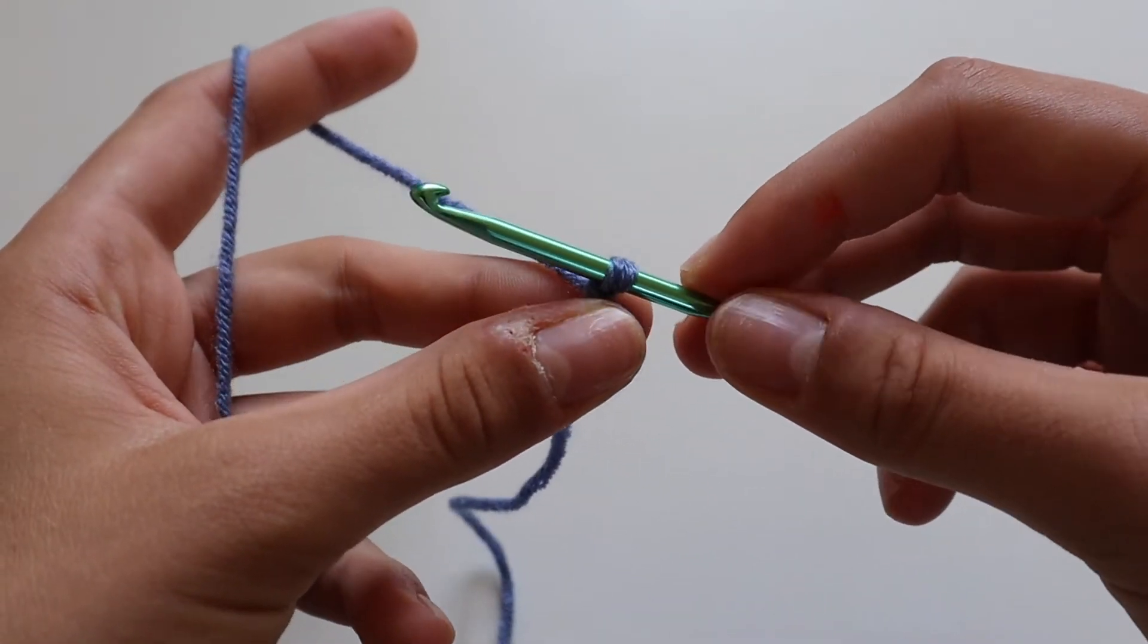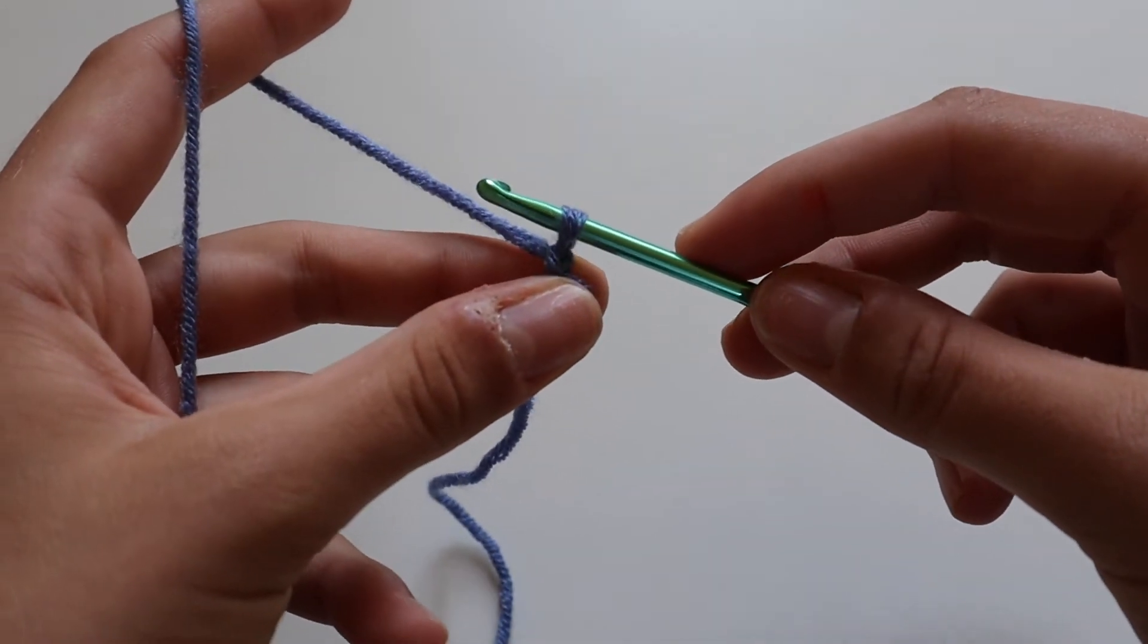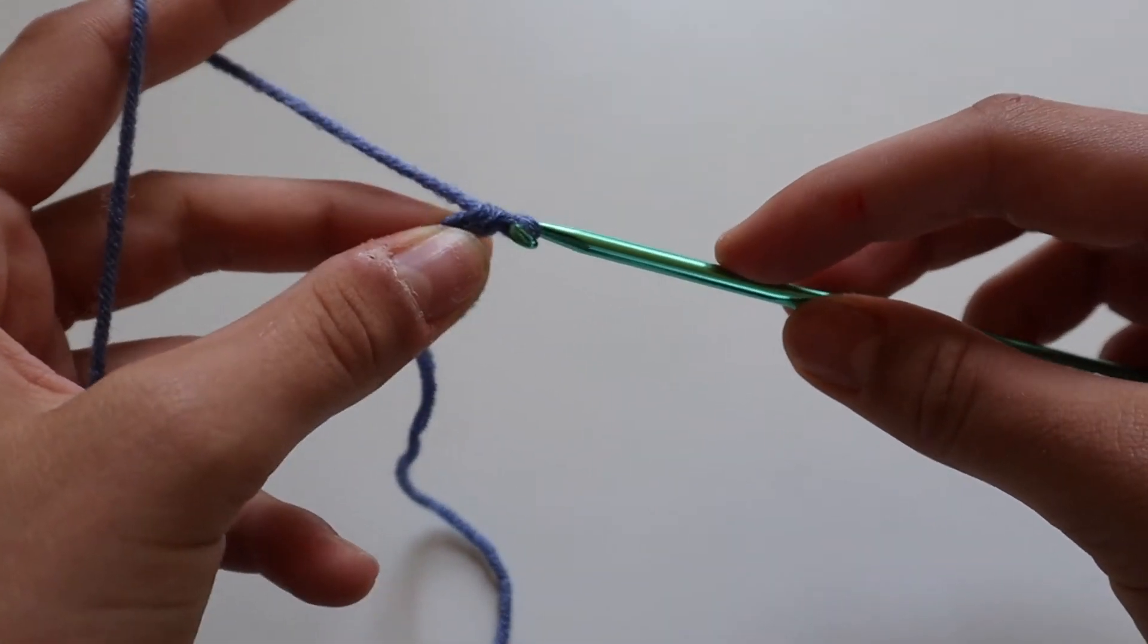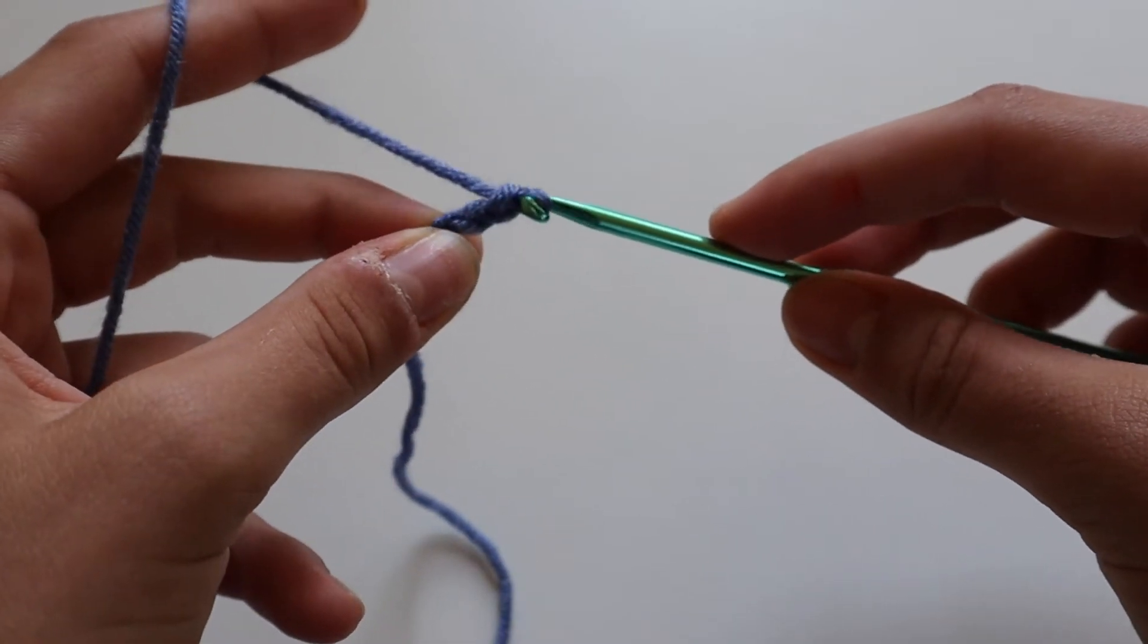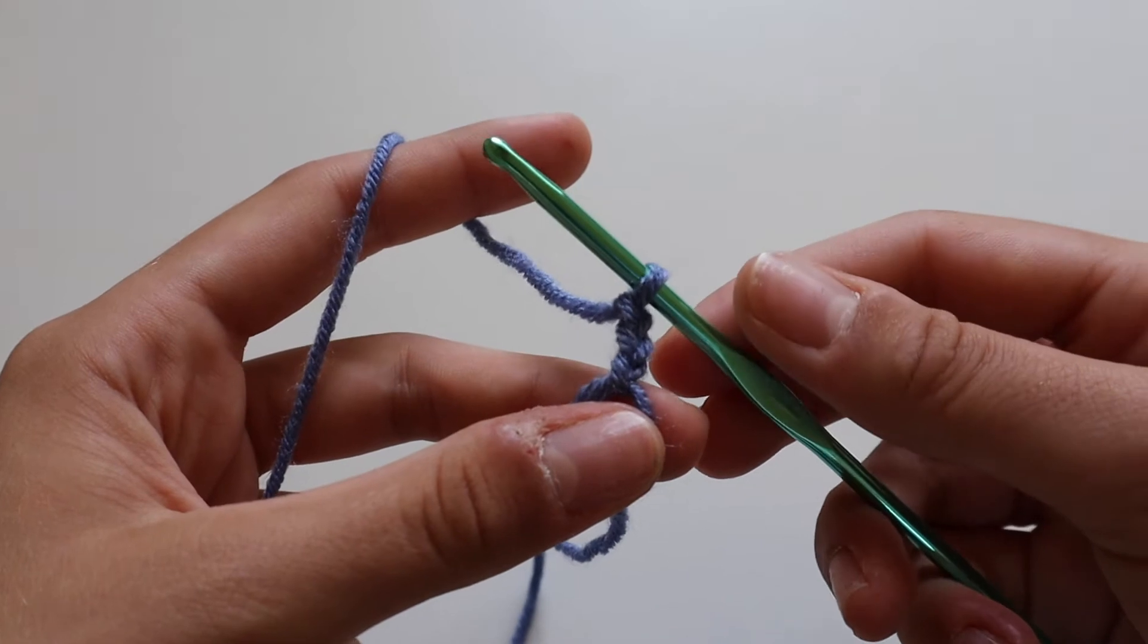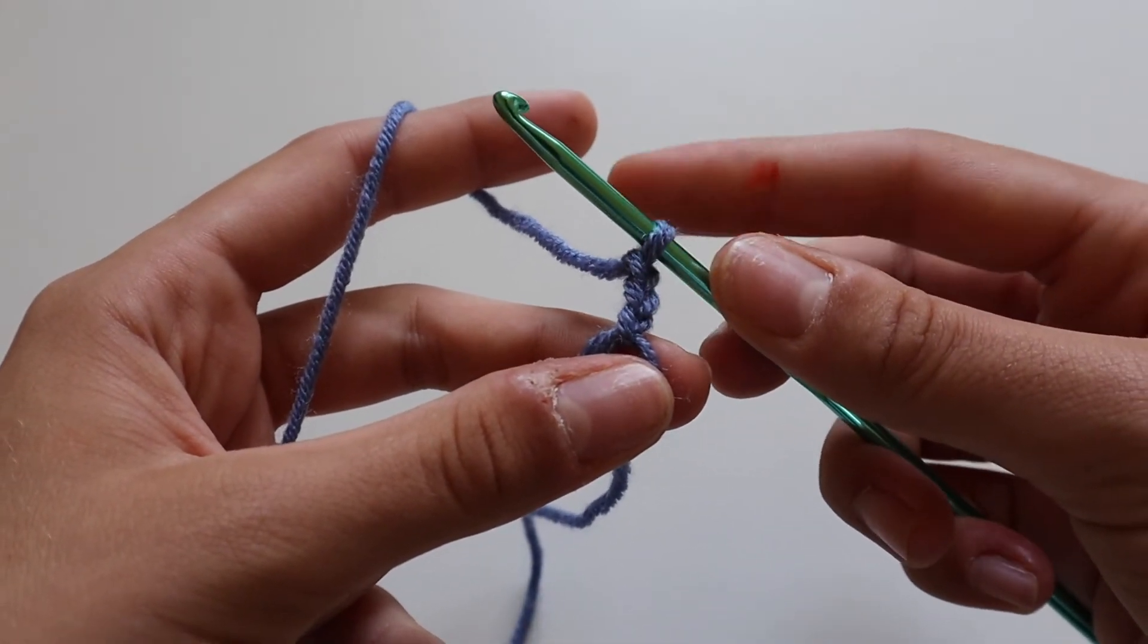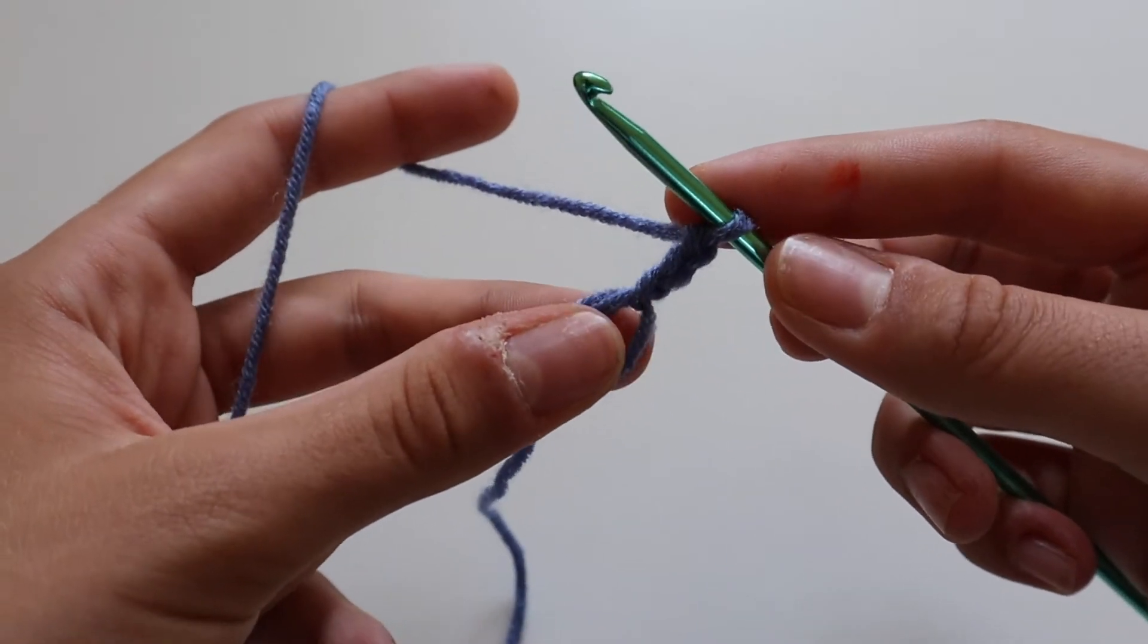So all we're going to do to begin this work is chain three. So your first one counts as your chain one and then you'll need to do two more chains to finish off. That's going to count as your first treble crochet. I'm working in UK terminology today so that's treble crochet in UK and double crochet in US terms.